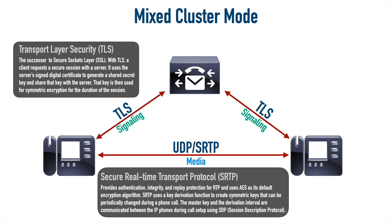For encryption, SRTP uses AES, the advanced encryption standard by default. Instead of IP phones exchanging digital certificates, SRTP uses a derivation function with a symmetric key that can change during the phone call. A master key is used in the derivation function and is communicated between phones via the session description protocol, or SDP message, during call setup. It specifies the master key and how often the derivation calculation runs — meaning how frequently the key changes. So even if someone had the master key, they couldn't intercept and understand the data without knowing the derivation frequency.